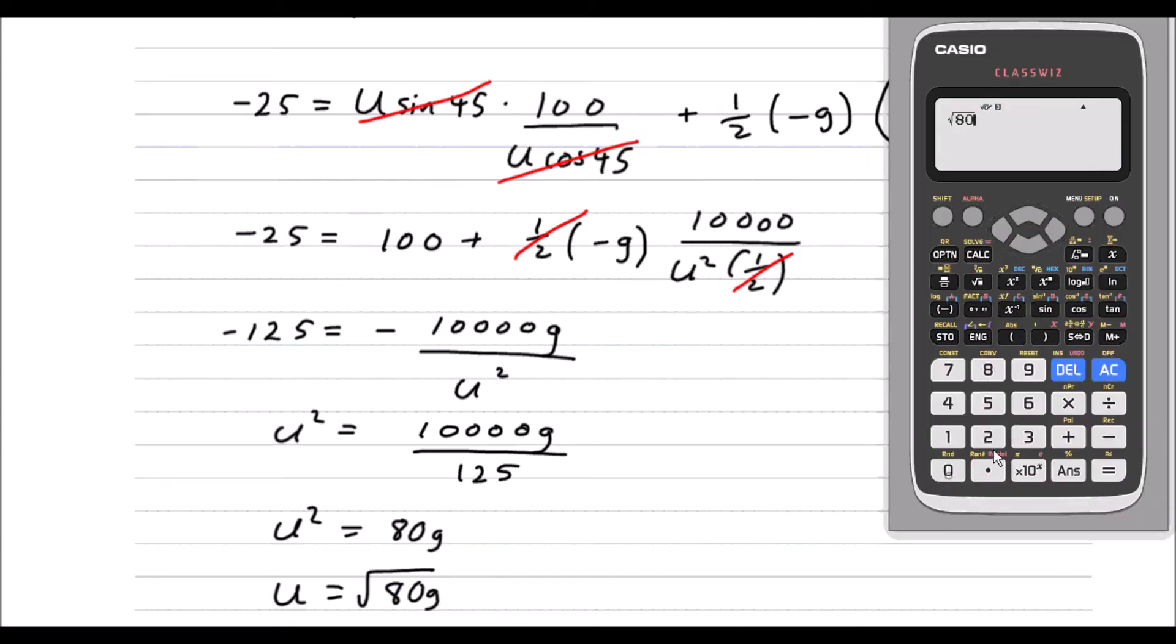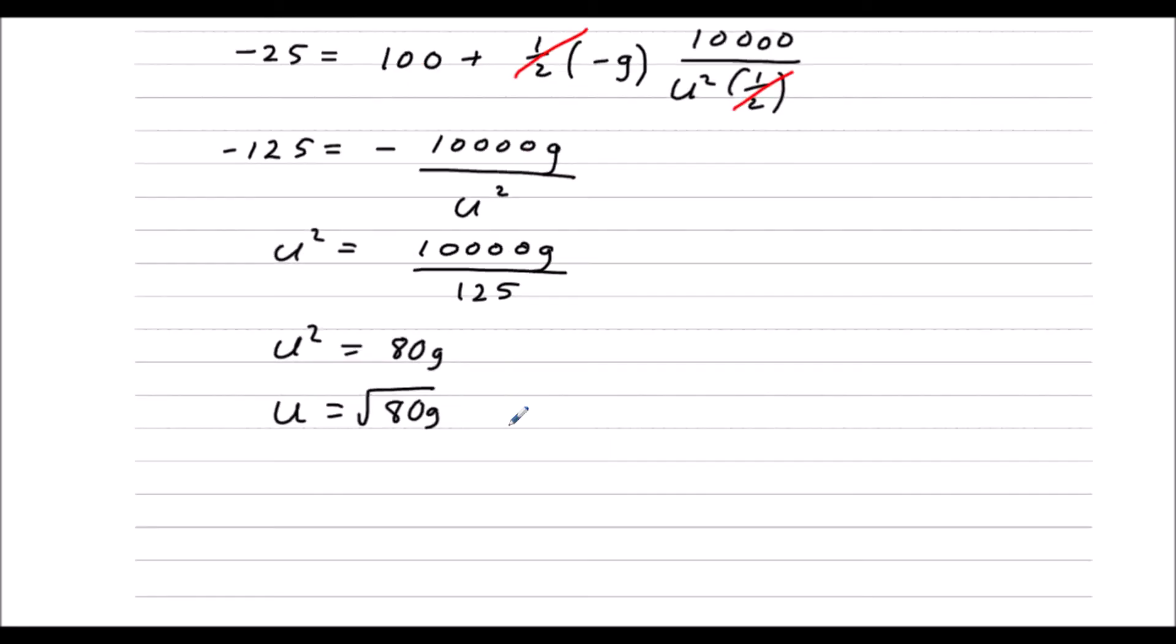U will be the square root of 80 times G. So square root of 80 times 9.8, and that's 28. Equals 28 meters per second. So two significant figures.